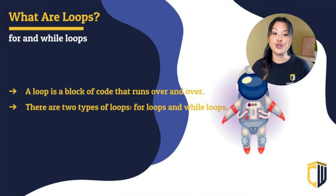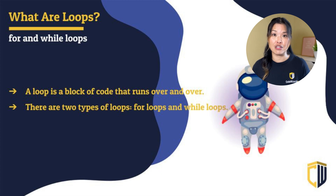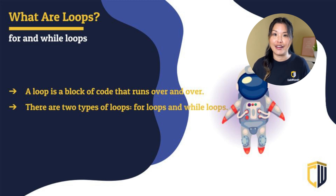So what are loops? Loops are kind of like they sound — a loop is a block of code that runs over and over in a circle. There are two types of loops we're going to talk about today: the for loop and the while loop. Loops are really important to programmers so they don't have to keep writing the same code over and over again. It also helps them prevent mistakes and those pesky bugs that we're always trying to get rid of.